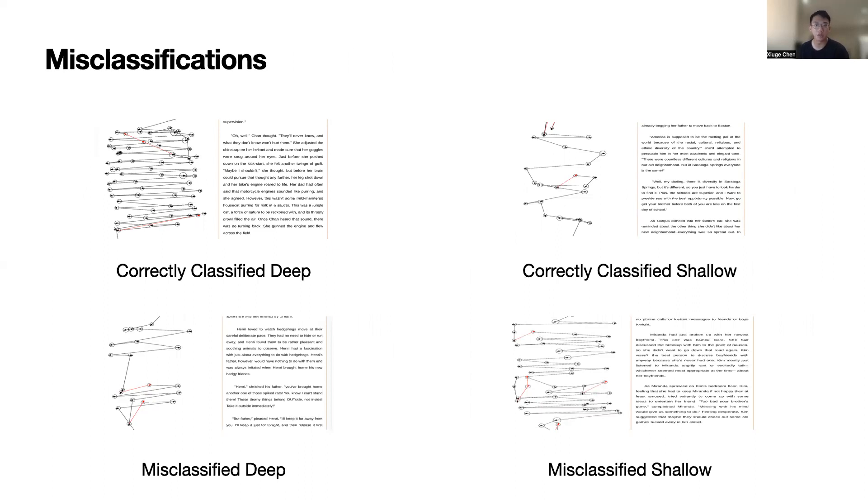There are instances where people read more like deeply in skim reading tasks, potentially due to finding the area of interest. Also, there are cases where people read more like skim reading in deep reading tasks, especially when they try to reread the entire article.